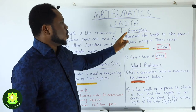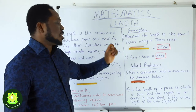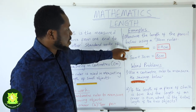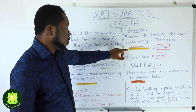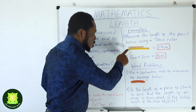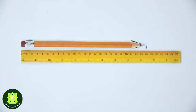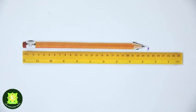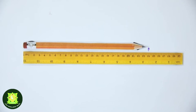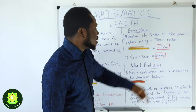Number one: measure the length of the pencil below using a 30 centimeter ruler. This is the pencil up here, and this is the 30 centimeter ruler we will use to measure it. Looking closely from zero, from the bottom of the pencil to the tip, the measurement is 24 centimeters.